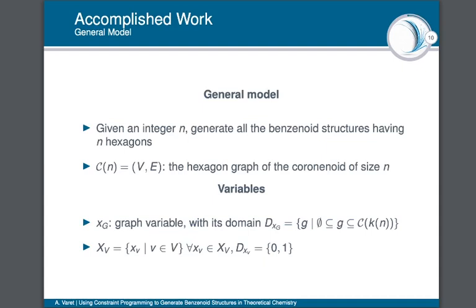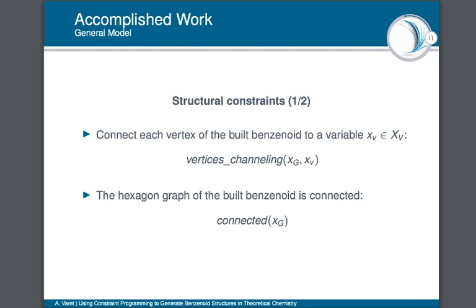Now I will detail the general model we implemented. It has to solve the BGP problem: given an integer N, generate all the non-symmetric benzenoid structures having N hexagons. We denote C(N) the hexagon graph of the coronenoid of size N. The main variable is XG, a graph variable corresponding to the hexagon graph of the benzenoid solution. Its domain is the set of all subgraphs of the coronenoid of size K(N). We also have XV, a set of boolean variables (domain {0,1}), each connected to the existence of one vertex of XG.